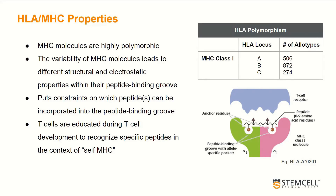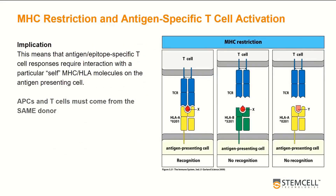Our T-cells are educated in the thymus during development to recognize peptides in the context of self-MHC, so both the MHC and the peptide interact with a given T-cell receptor during antigen presentation. This leads to the concept of MHC restriction: a T-cell receptor will recognize protein X in the context of a particular HLA allele, such as HLA-A*02:01. However, the same peptide on a different or non-self MHC molecule will not result in T-cell recognition. Additionally, the peptide specificity of that T-cell receptor means it will not recognize a different peptide, even if it's loaded onto a self-MHC molecule.